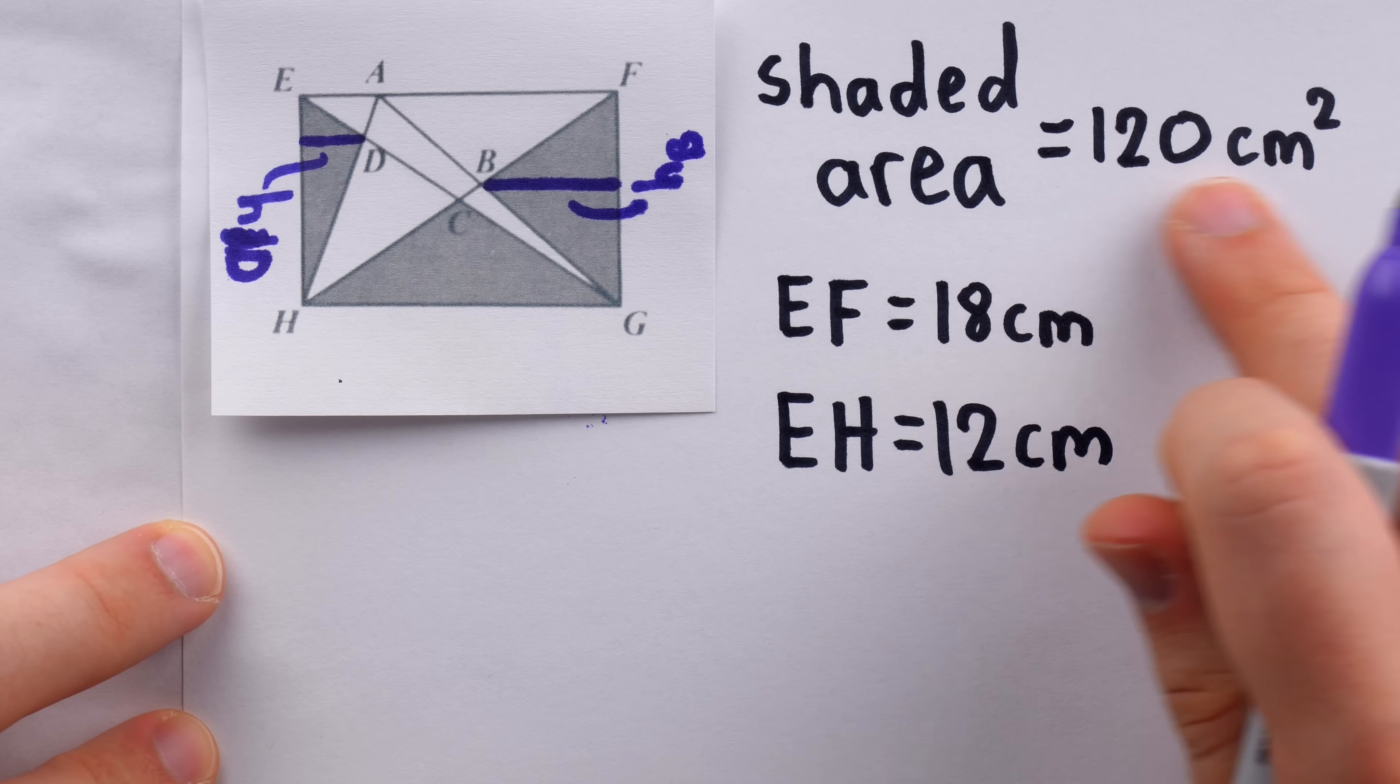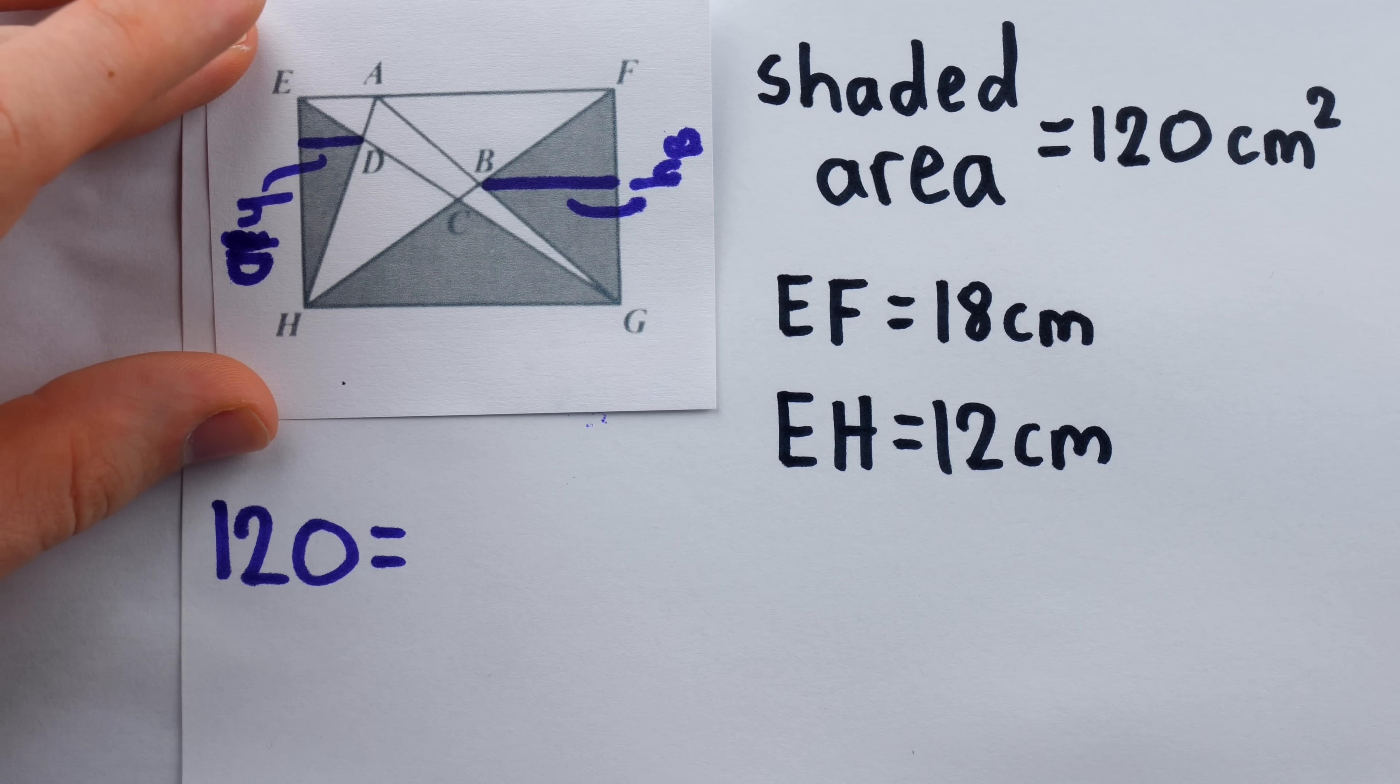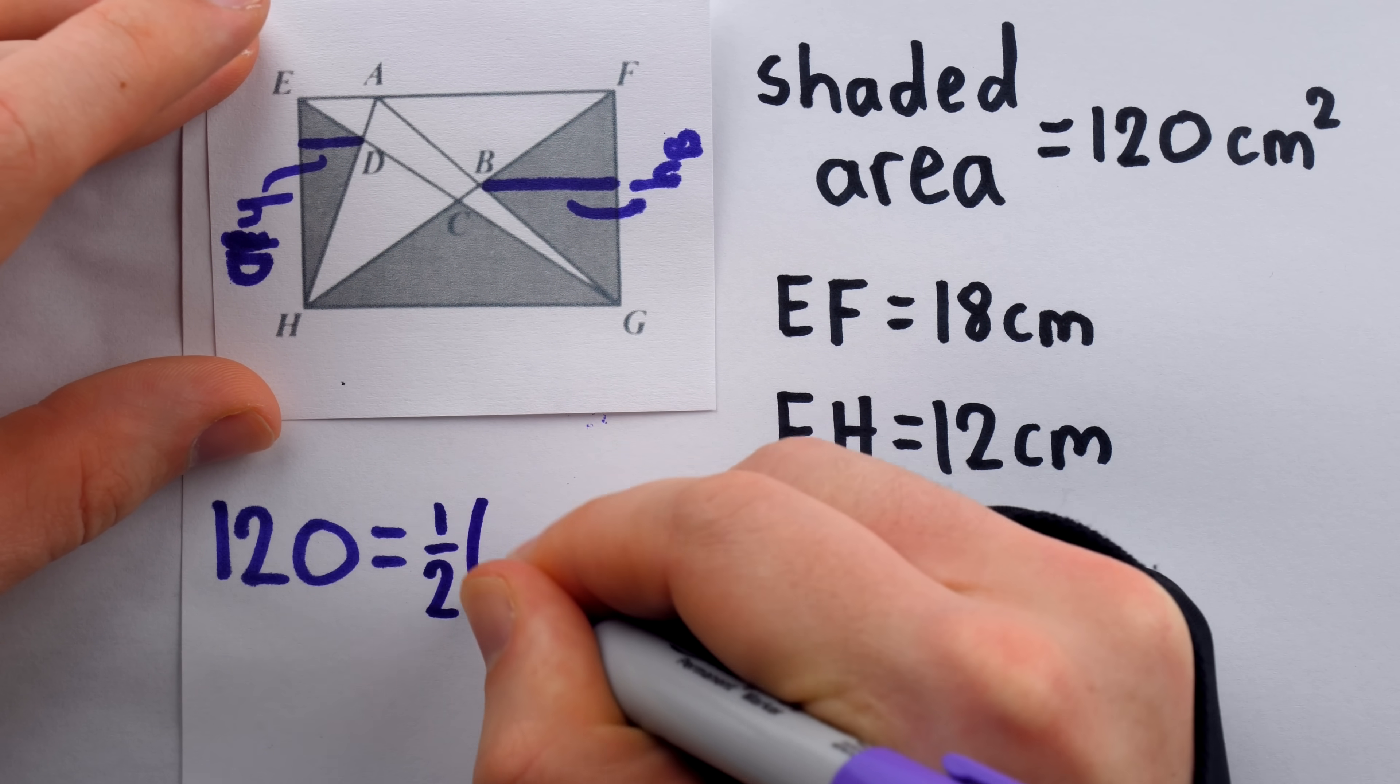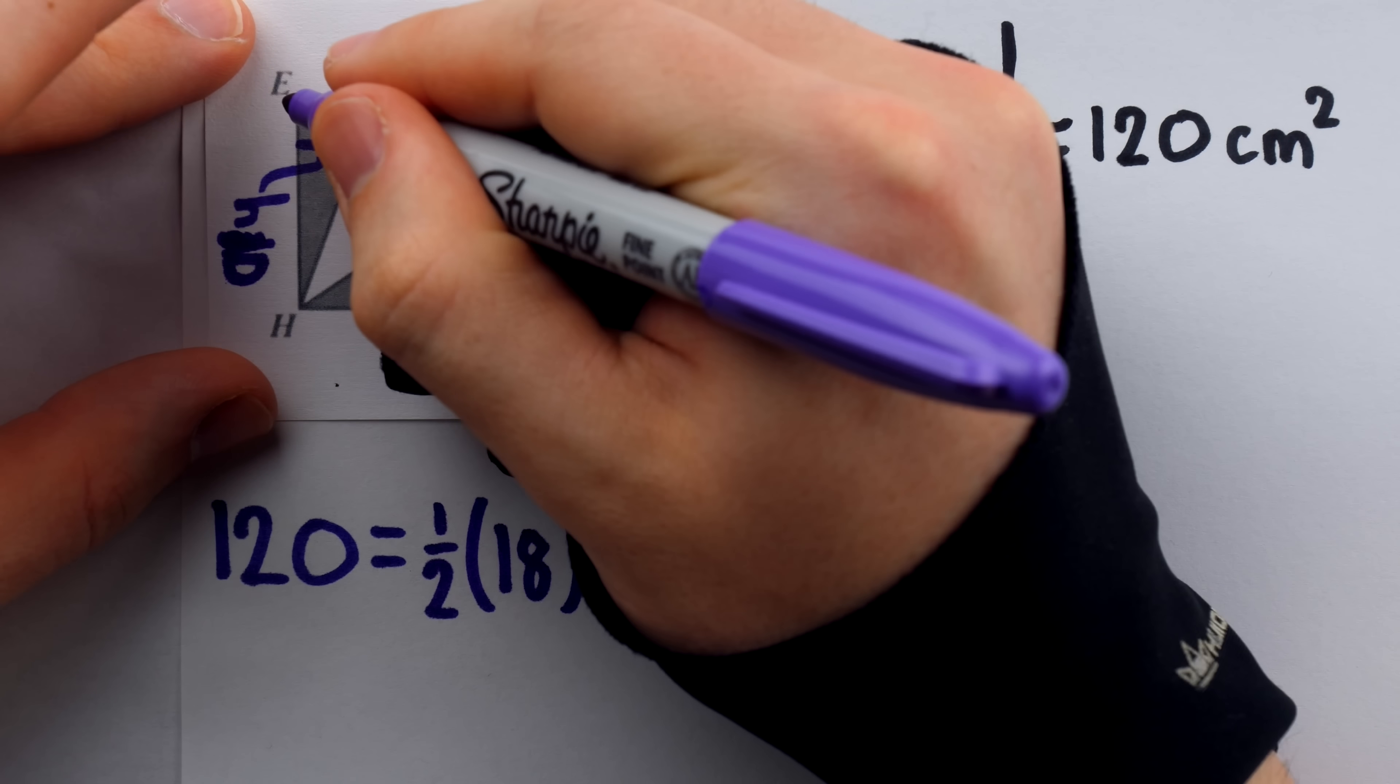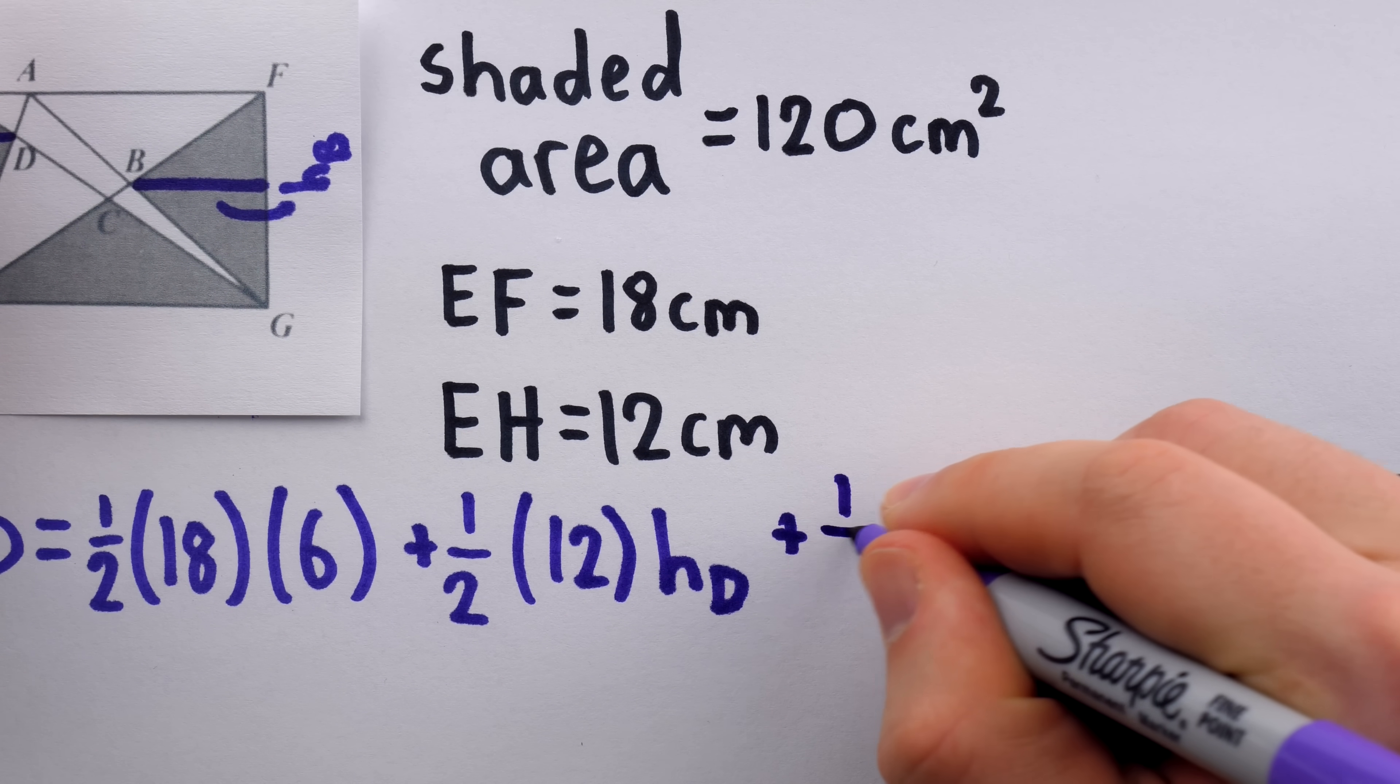Okay, having labeled those heights, and knowing that the total shaded area is 120 square centimeters, we can set up this equation. 120, the total shaded area, is the area of these three shaded triangles added together. This shaded triangle we know. Its base is the length of the rectangle, which was given to us as 18. And its height has to be halfway up the rectangle, so half of 12, so 6. So the area of the triangle is 1/2 times the base of 18 times the height of 6. Then we have to add in the area of triangle EDH. The area of that triangle is 1/2 times the width of the rectangle, which was given to us as 12, so 1/2 of 12, times the height, which we've agreed to call h_D. And same thing for this triangle over here, FBG, except the height is h_B, instead of h_D.